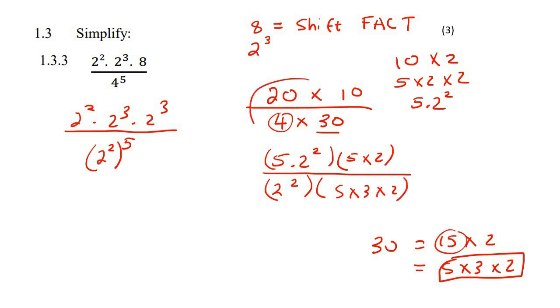Now what's happened is we've gone and we've taken all of these different numbers, and we've broken them down into their building blocks. Now it becomes really easy to simplify, because this five and this five can cancel, this two and this two can cancel, this two squared and this two squared can cancel.